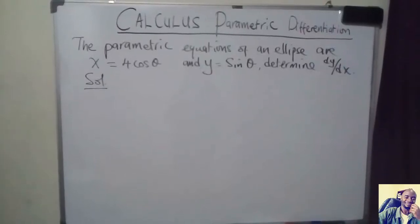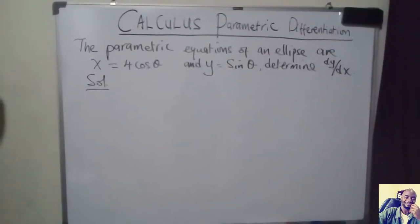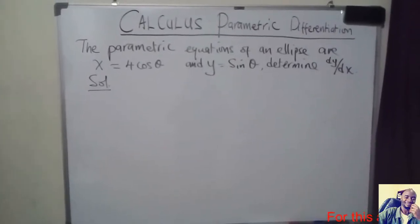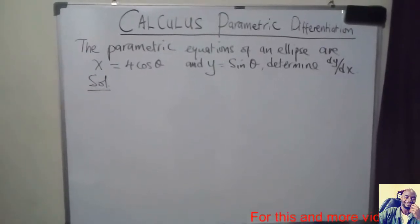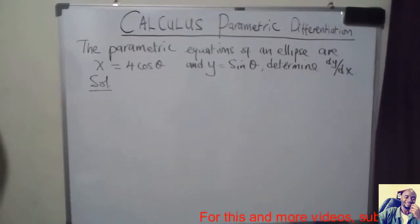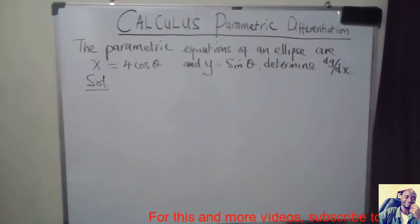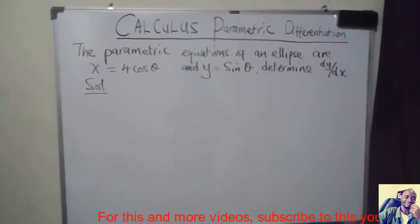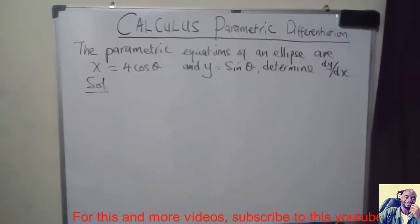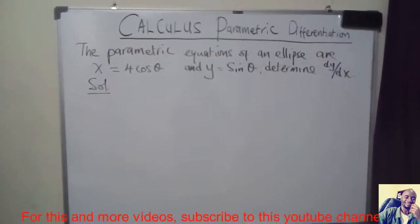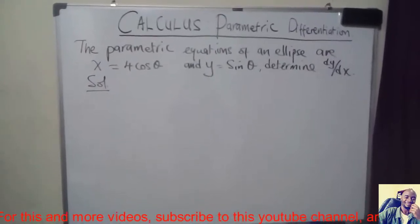Welcome. In this video, we want to see how we can do parametric differentiation. The question we want to solve is: the parametric equations of an ellipse are x is equal to 4 cos theta and y is equal to sin theta.